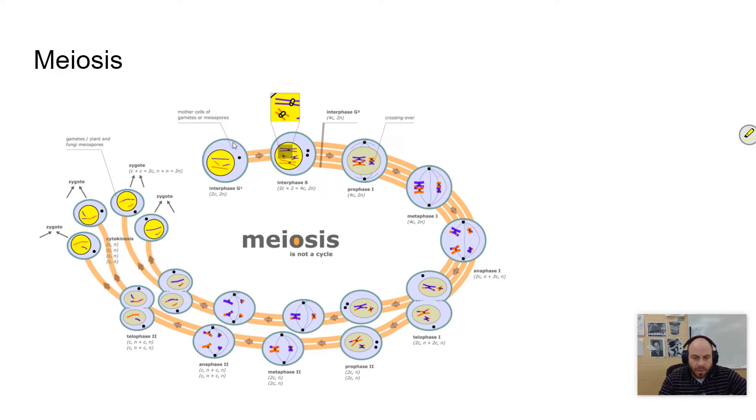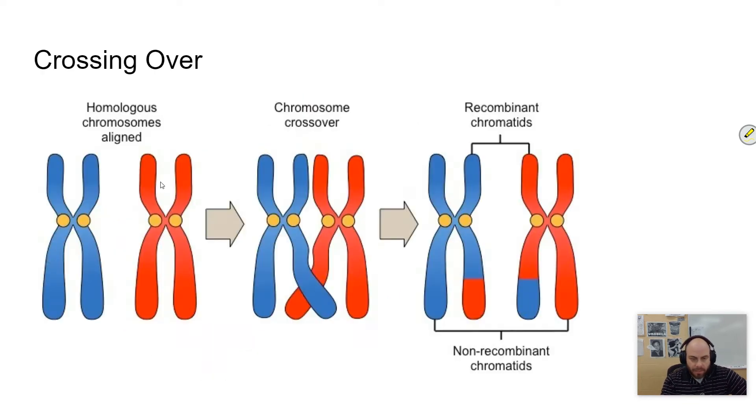We start with one diploid cell that duplicates, and then you end up with four haploid cells that are genetically diverse from one another. So where does that genetic diversity take place?